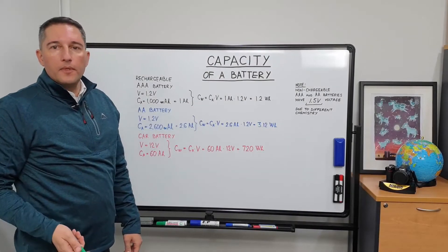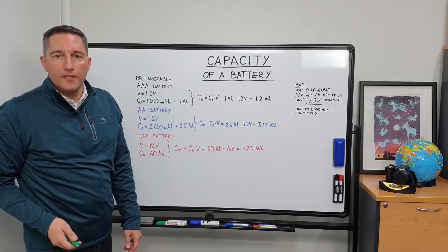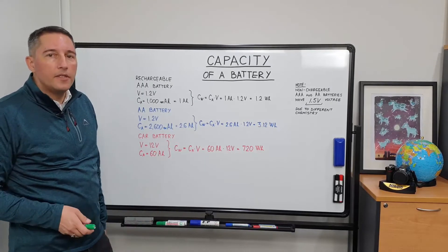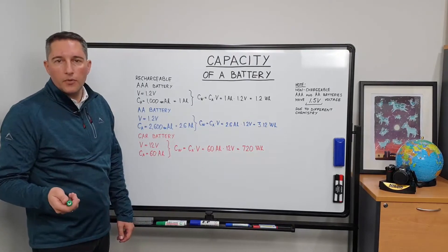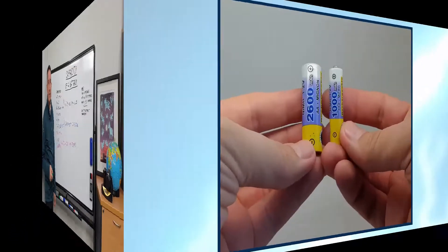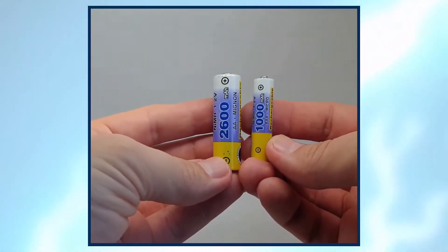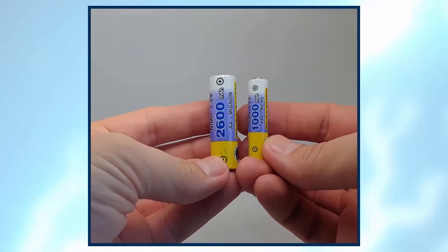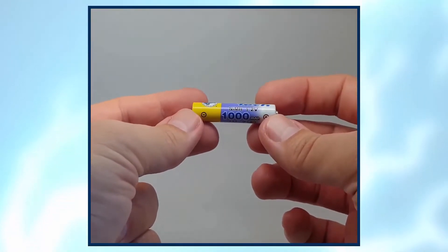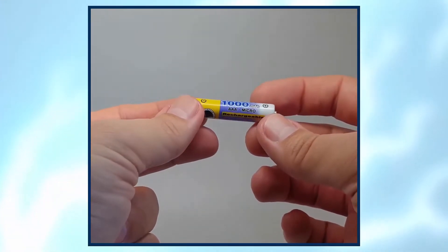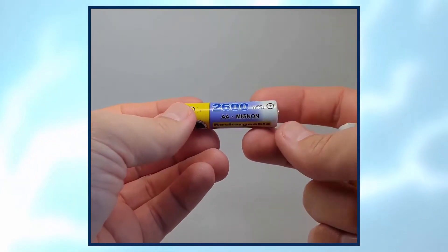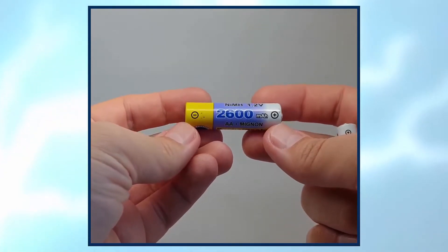Let's perform some calculations with battery capacity. I'm going to use a AAA battery, an AA battery, and a standard car battery. First, let's have a quick look at how AA and AAA batteries are labeled. The larger one is the AA battery and the smaller one is the AAA battery. The AAA battery is 1.2 volts, 1,000 milliamp hours. The AA battery is 1.2 volts, 2,600 milliamp hours.